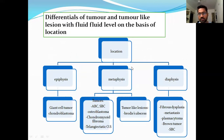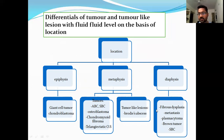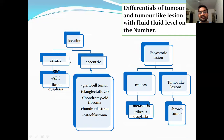The differential can also be made on the basis of location: epiphysis, metaphysis, or diaphysis. Tumors with affinity for the epiphysis include giant cell tumor and chondroblastoma. In the metaphysis: aneurysmal bone cyst, simple bone cyst, osteoblastoma, chondromyxoid fibroma, and telangiectatic osteosarcoma. In the diaphysis: fibrous dysplasia, metastasis, plasmacytoma, and round cell tumors. Further location can be centric or eccentric. Centric: simple bone cyst, aneurysmal bone cyst, and fibrous dysplasia. Eccentric: giant cell tumor, telangiectatic osteosarcoma, chondromyxoid fibroma, chondroblastoma, and osteoblastoma.